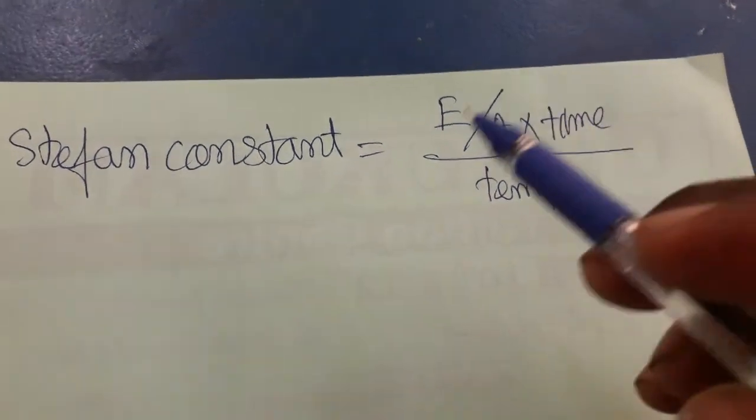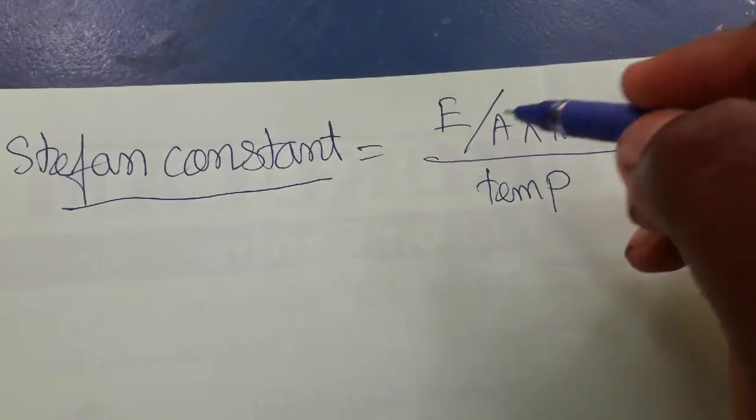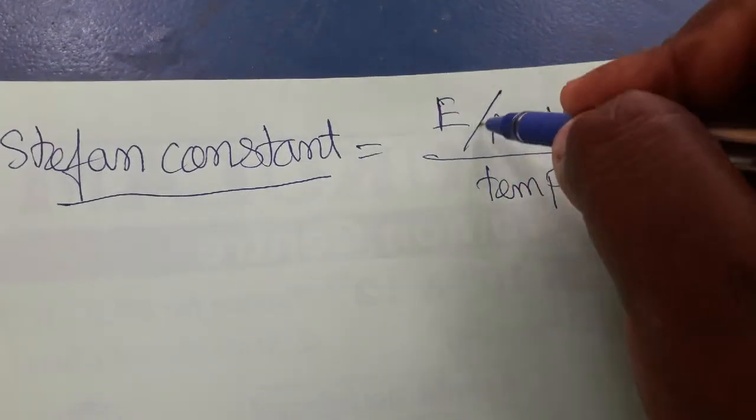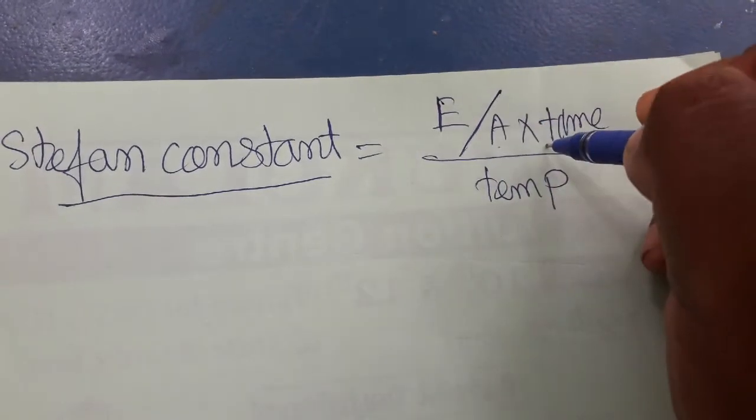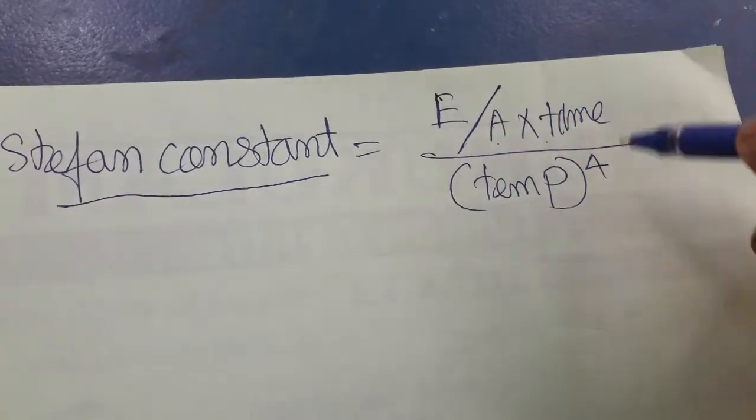Hello student, today we are going to learn how to find the SI unit of Stefan constant. Stefan constant formula is energy per area into time divided by temperature power 4. It is a formula for Stefan constant.